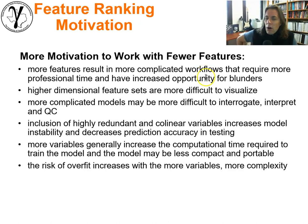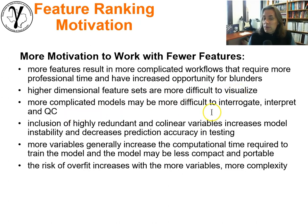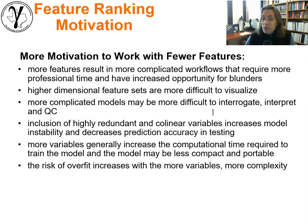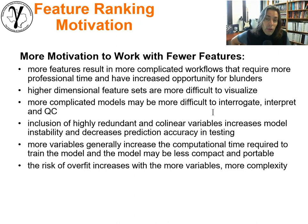Higher dimensional features are much more difficult to visualize and understand — you may miss important information. More complicated models may be more difficult to interrogate, interpret, and QC. Given the value of decisions we make in the subsurface, we need to be able to understand the model — we can't treat it like a black box. Inclusion of highly redundant, collinear, or multicollinear variables increases model instability and decreases prediction accuracy, directly impacting model variance and resulting in poorer performance during true testing.